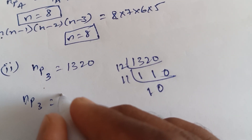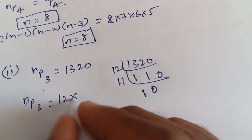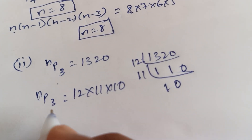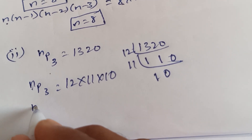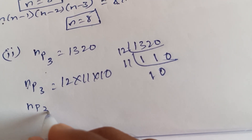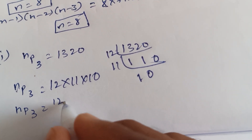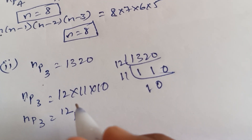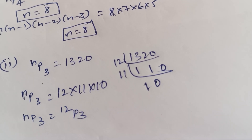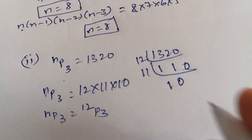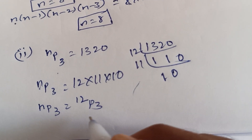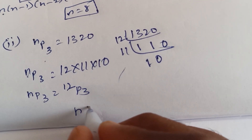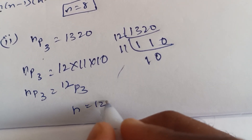NP3 equals to 12 into 11 into 10. So NP3 equals to 12P3. So N means 12. So N is equals to 12.